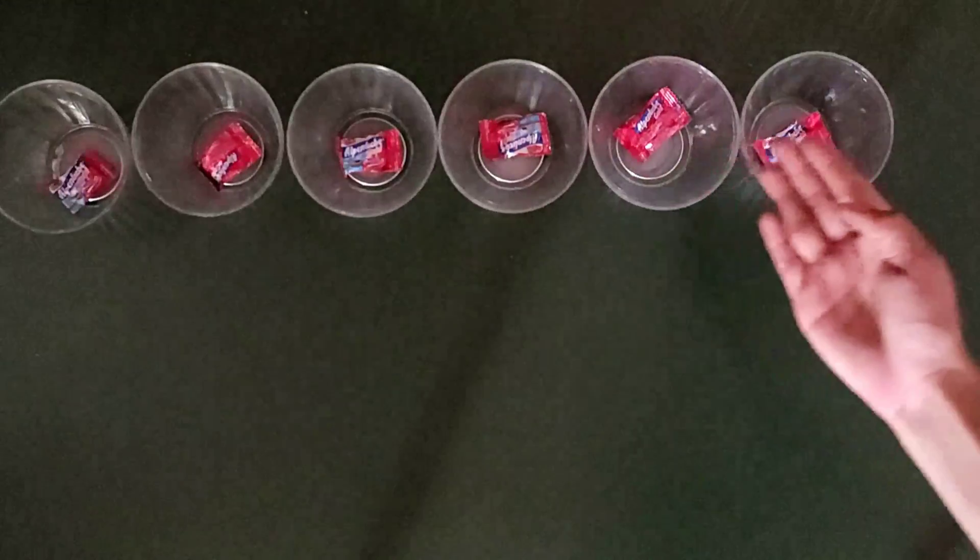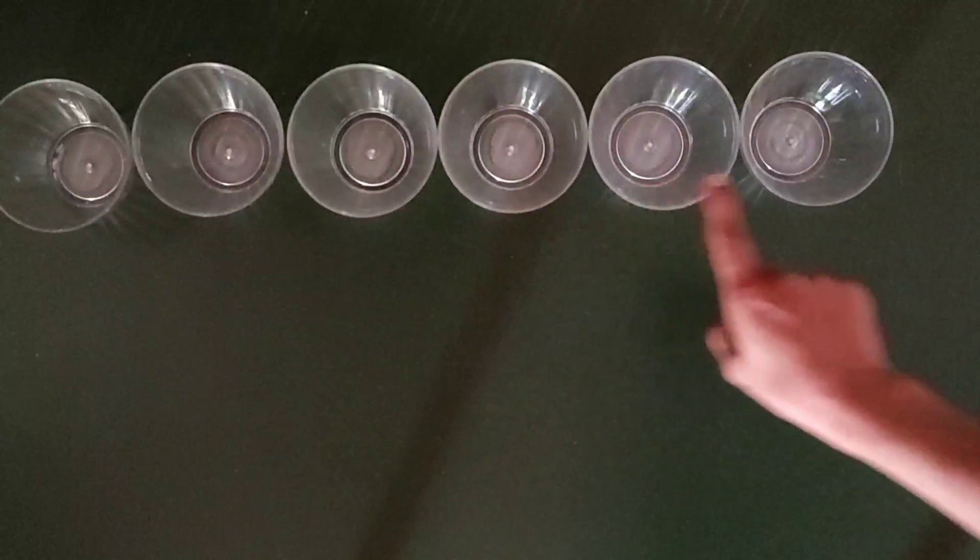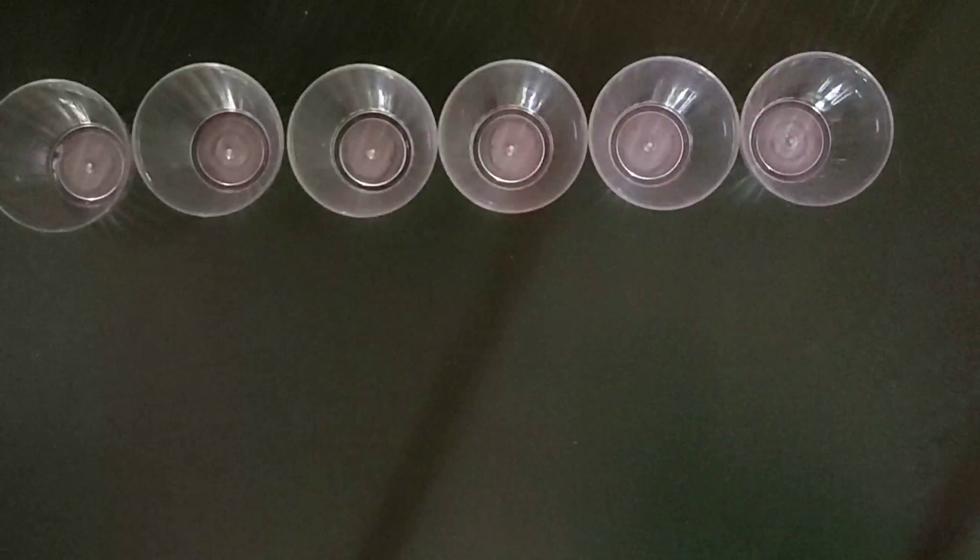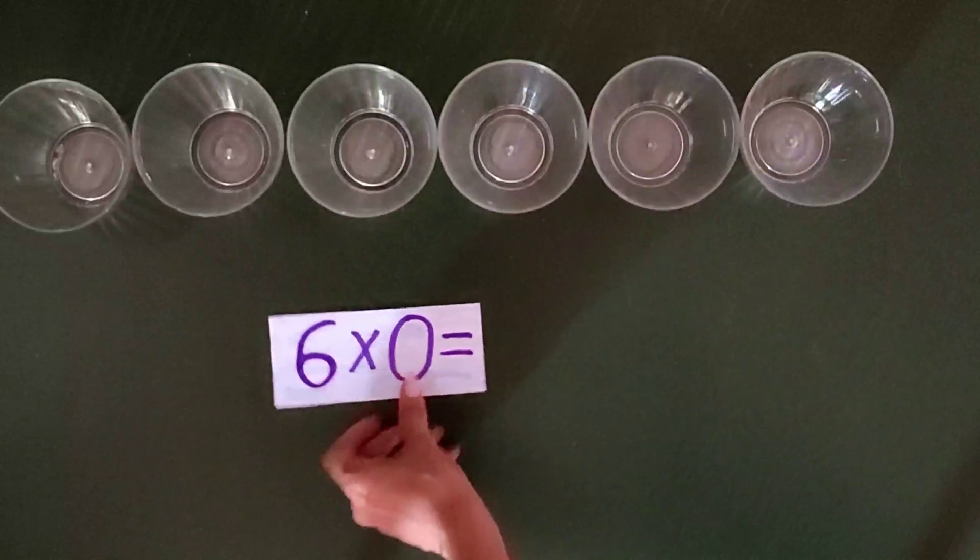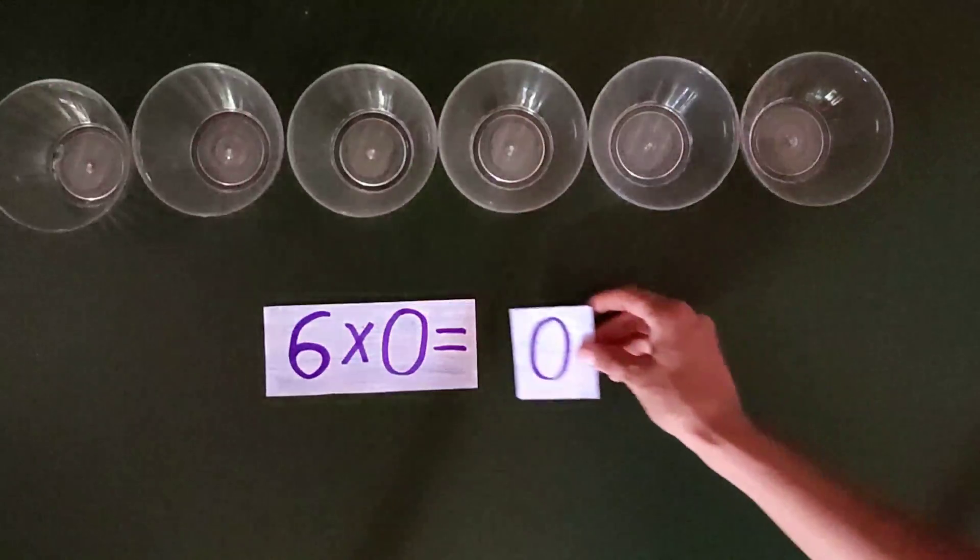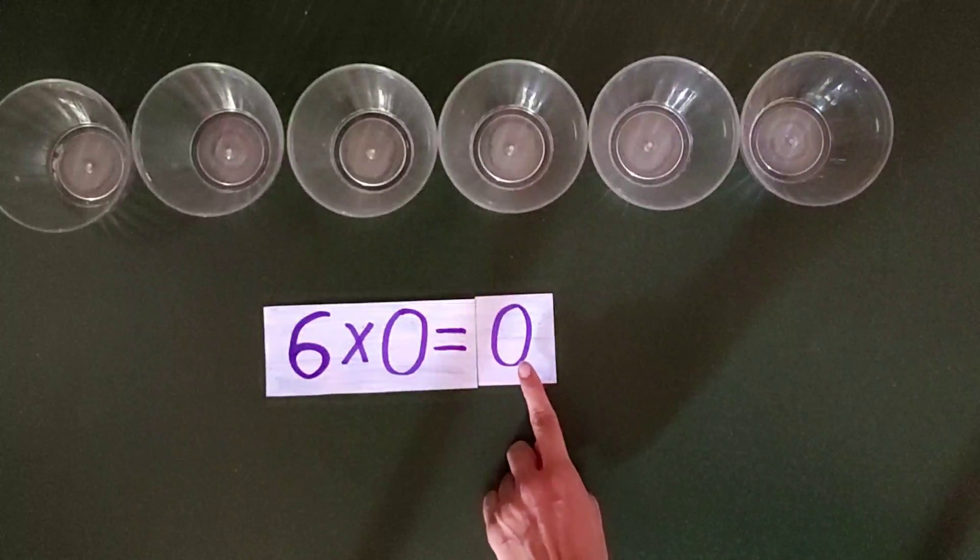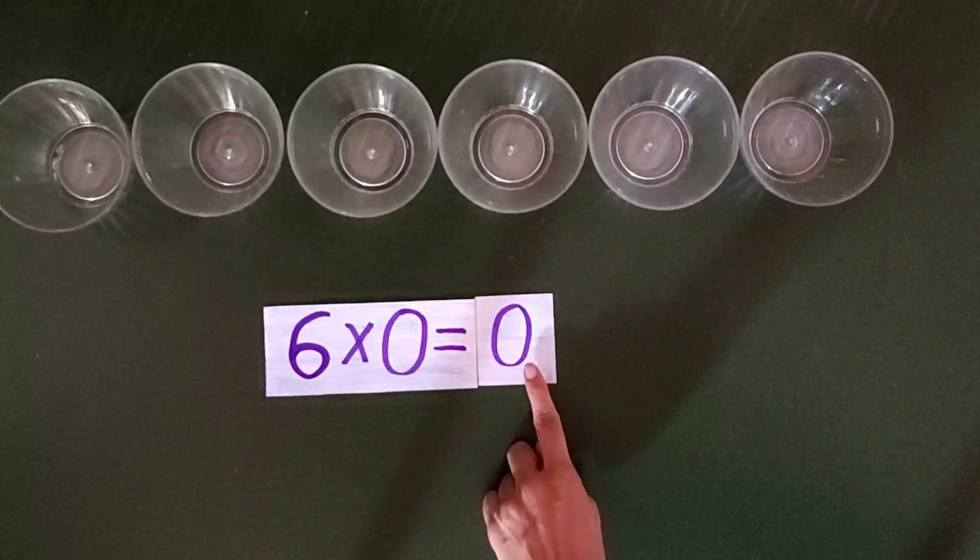Now if we take out the candies from these balls, we are left with how many candies? None. We can write it as 6 balls each having no candy and the count for total candies is 0. So we learn 6 multiplied by 0 equals 0.